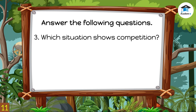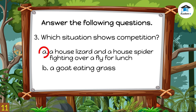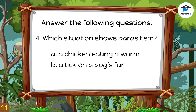Question 3: Which situation shows competition? A) A house lizard and a house spider fighting over a fly for lunch, or B) A goat eating grass. The correct answer is A — the lizard and the spider compete for the food. Question 4: Which situation shows parasitism? A) A chicken eating a worm, or B) A tick on a dog's fur. The correct answer is B — a tick is a parasite to the dog.